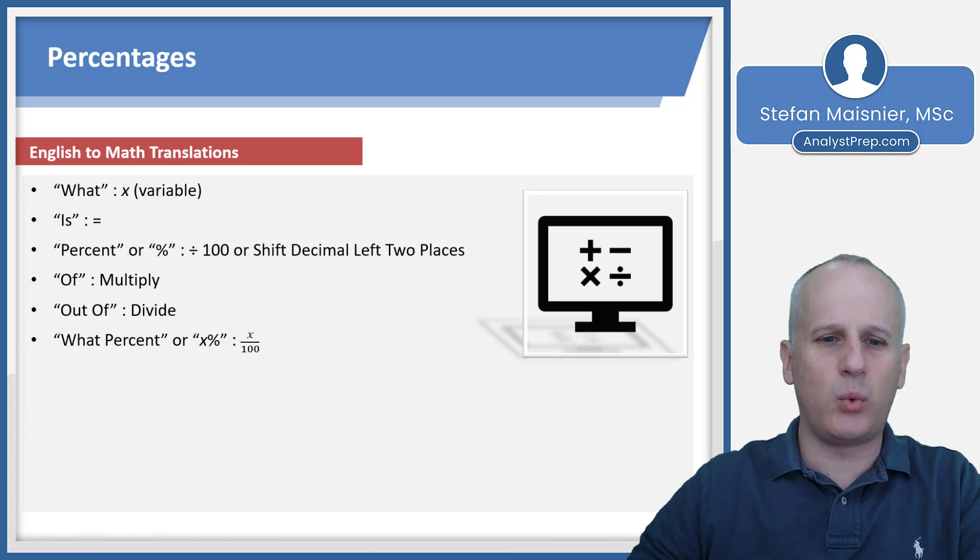'Out of' means divide. So if I have five out of seven, I take five and divide by seven. If you see the phrase 'what percent' or the expression x with the percent symbol, you must write out x divided by 100. You cannot just shift the decimal left two places in the value because you don't know where the decimal lies in the variable x.